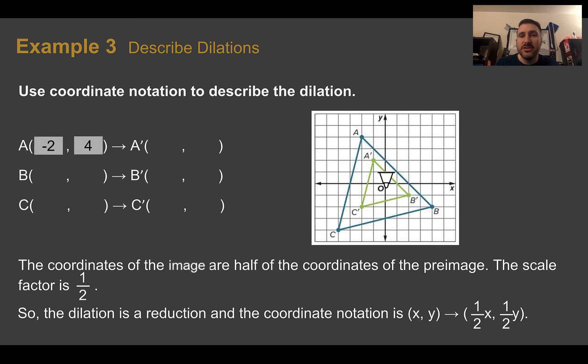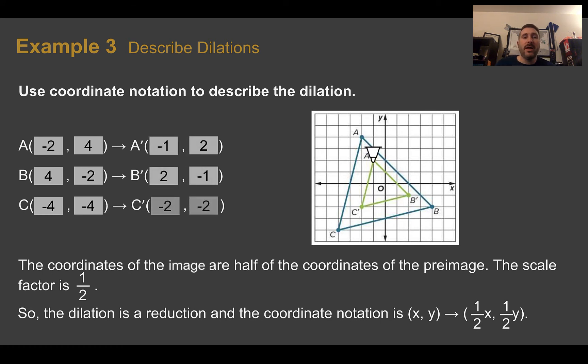So first we need to figure out what happened to the points in order to come up with our coordinate notation. Originally, A was at negative 2, 4. B was at 4, negative 2. And C was at negative 4, negative 4. Then we can look, where did it end up? A is now at negative 1, 2. B is now at 2, negative 1. And C is now at negative 2, negative 2. So we need to look for the pattern to figure out how to go from one thing to the next. I can see easily that 4 to 2, I just had to divide by 2. But unfortunately, scale factor is not a division number. We need to think about what are we multiplying by. So as a fraction, it would be like taking the number and multiplying it by 1 half. The coordinates of the image are half of the coordinates of the preimage. So our scale factor is 1 half, which means our dilation is a reduction. And our coordinate notation, we would say that our preimage to go to our image would take the coordinate and multiply it by 1 half.